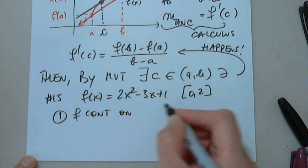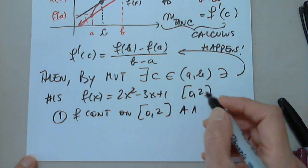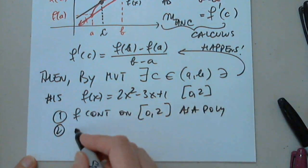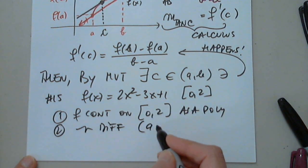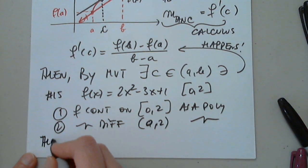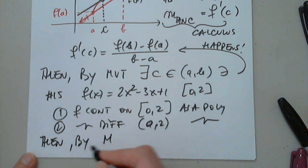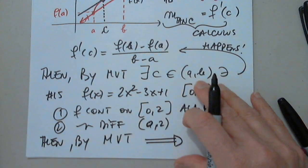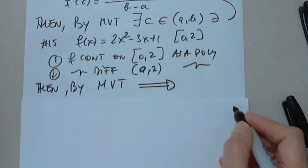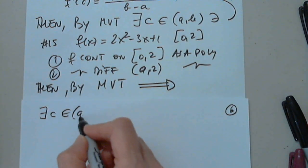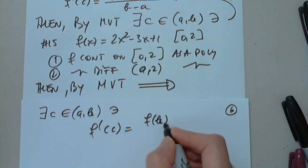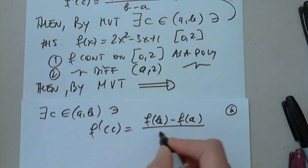I have to state those two hypotheses. So number one, f continuous on 0, 2 as a polynomial, as we know, as a poly. Number two, for the same reason, differentiable on the open interval 0, 2 for the same reason. Then, by the mean value theorem, I will move on to page 6. There exists a c in the open interval a comma b such that, please remember, f prime of c equals f of b minus f of a divided by b minus a.